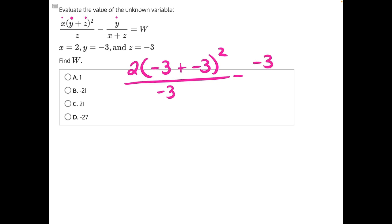which is negative 3, over x plus z, or 2, plus a negative 3. All of that is equal to w.